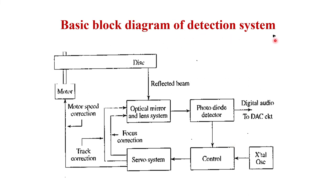The basic block diagram of the detection system: your disc is placed here, a motor rotates the disc. A crystal oscillator is given to the control servo system, which is responsible for the rotation of the motor and the optical mirror and lens system. The reflected beam is given to the photodiode detector, converted into digital audio, then passed to a digital-to-analog converter to get the original signal back.